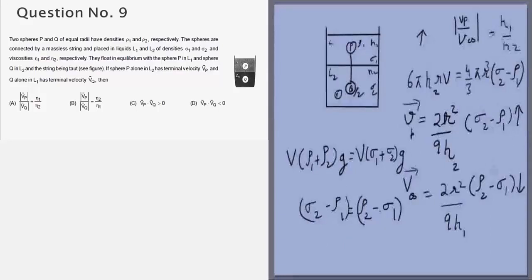Because these two terms are the same, we are talking about magnitudes not direction. 2R² by η is completely the same, so it will be η₁ by η₂. So the answer to this question will be option A and option D. The first option is correct and so is the third option. Thank you.